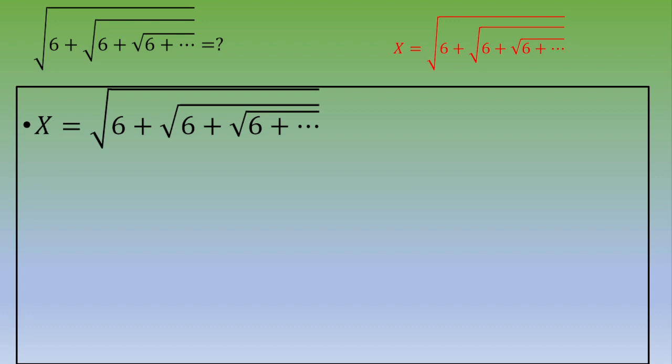So then if x is a square root, most of the time to solve a square root you square both sides. So let's do that. x squared is equal to 6 plus square root of 6 plus square root of 6 plus and so on and so forth.